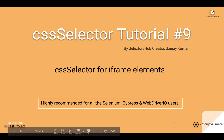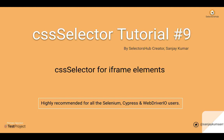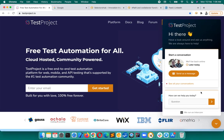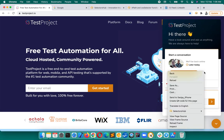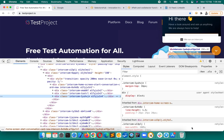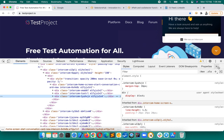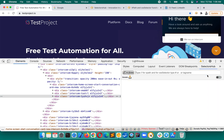In this lecture we'll learn how to write CSS selectors for iframe elements. There is no specific rule or anything specific which we will have to take care of while writing CSS selectors for iframe elements. The only thing we will have to be careful about is: if any element is inside an iframe, then in our automation script we will have to switch inside the iframe. That is the only thing you will have to handle.